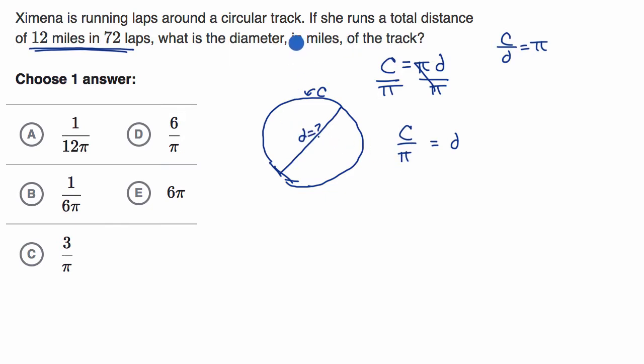Now what's the circumference here? Well, if 12 miles is equal to 72 laps, so 12 miles is equal to 72 laps, how do we figure out what one lap is going to be? Well, we could divide both sides by 72, because if we divide both sides by 72...